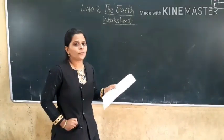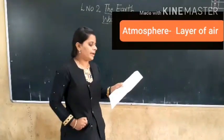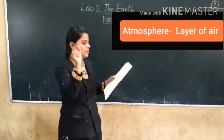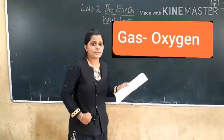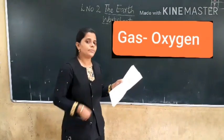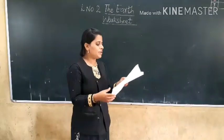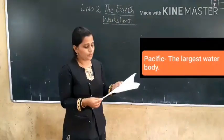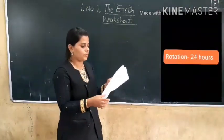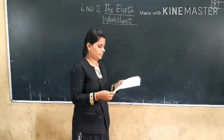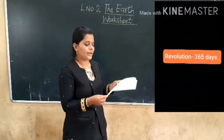Now we will see the match the following — question four. First: atmosphere. What is atmosphere? Layer of air. Write 'layer of air' in front of question 1. Second: gas — the gas here is oxygen. Third: Pacific Ocean — it is the largest water body. Fourth: rotation — how many hours? 24 hours. Fifth: revolution — the answer is 365 days. You can match or write the number.